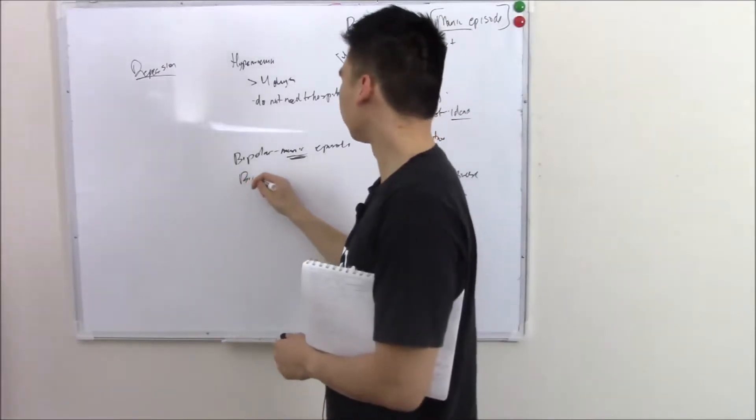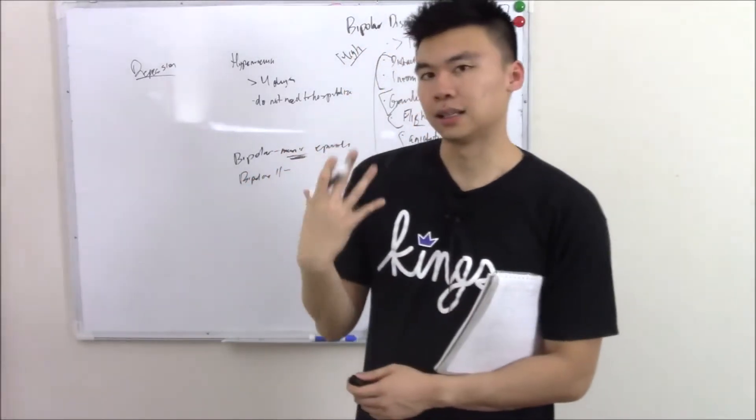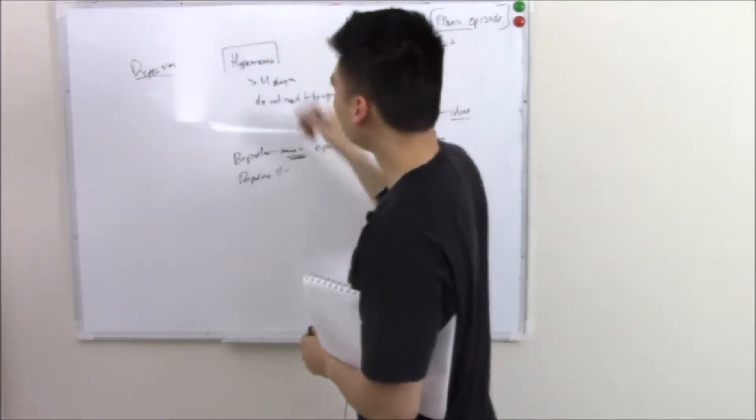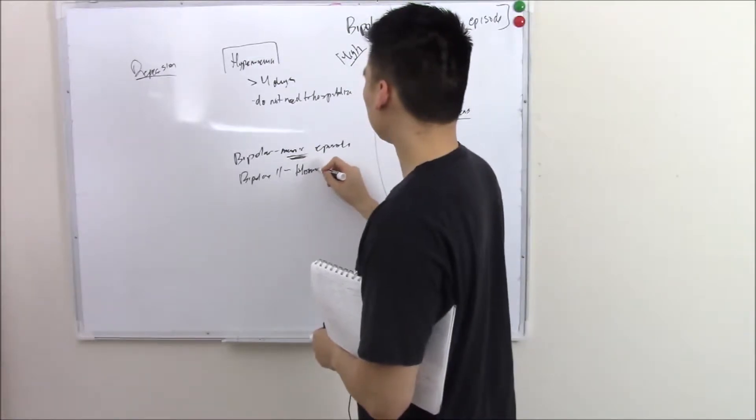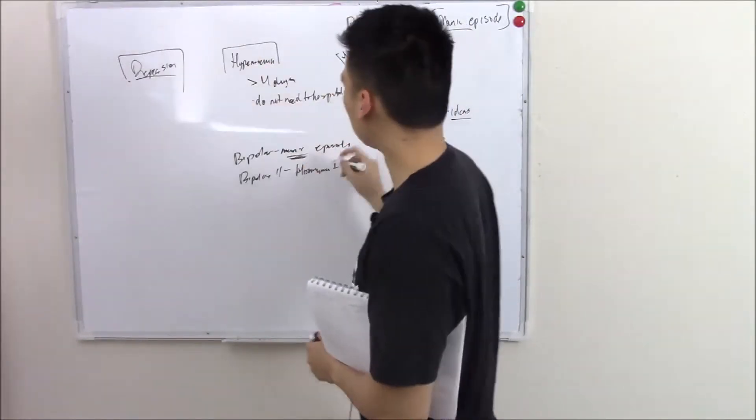Bipolar 2 is slightly less severe. So the high will be slightly lesser high. So hypomania. The low will be depression.